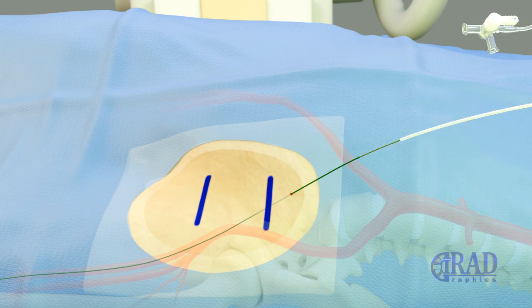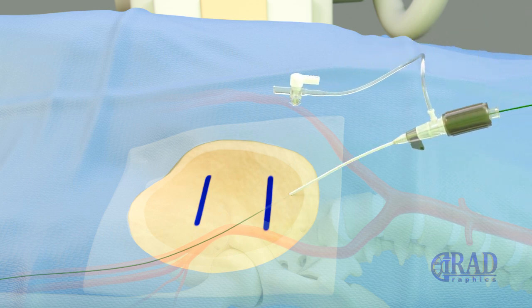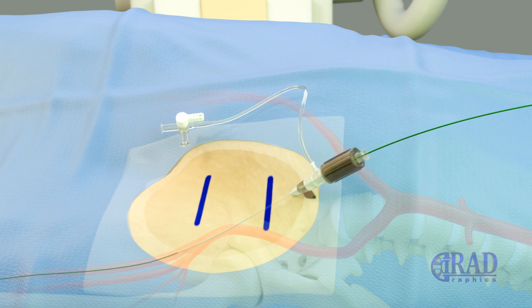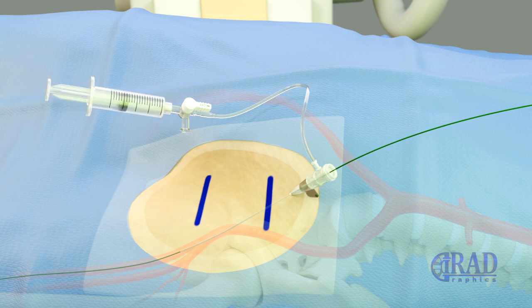The outer layer of the transitional sheath is then exchanged for a vascular sheath. The dilator of the vascular sheath is removed. At this point, the sheath is aspirated and flushed with heparinized normal saline.